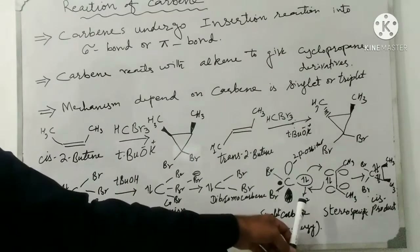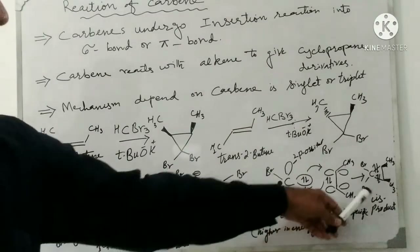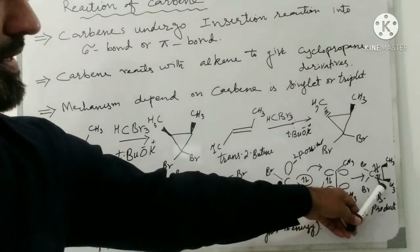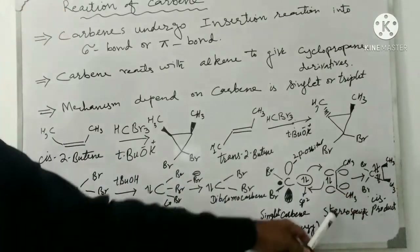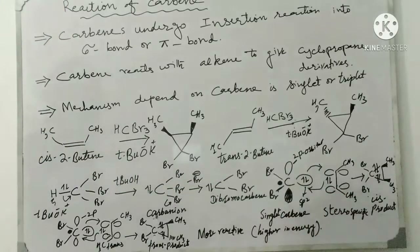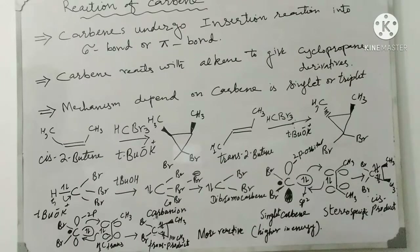The stereochemistry of the reactants is preserved in the product. This is called stereospecific. Singlet carbenes undergo a one-step concerted reaction to form the product. Therefore, reactions of singlet carbene are stereospecific.